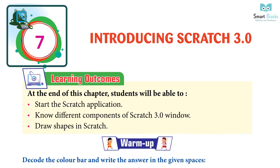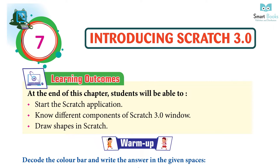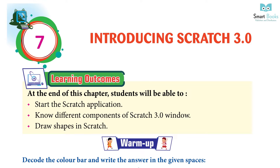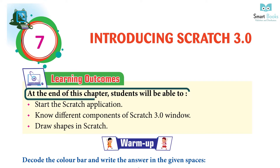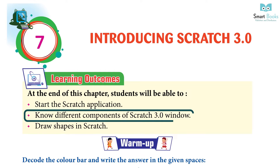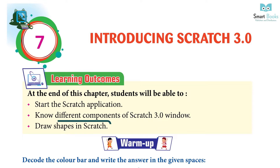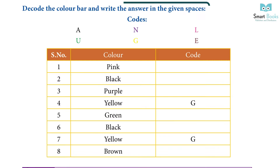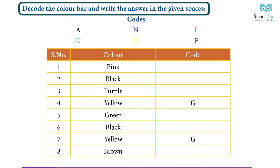Chapter 7: Introducing Scratch 3.0. Learning outcomes: at the end of this chapter, students will be able to start the Scratch application, identify different components of the Scratch 3.0 window, draw shapes in Scratch, and complete the warm-up activity by decoding the color bar and writing answers in the given spaces.